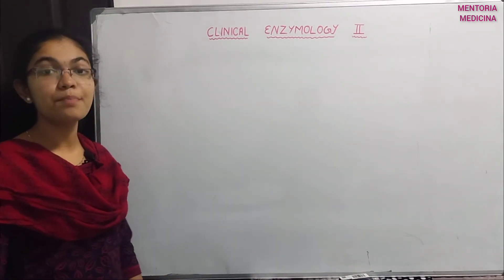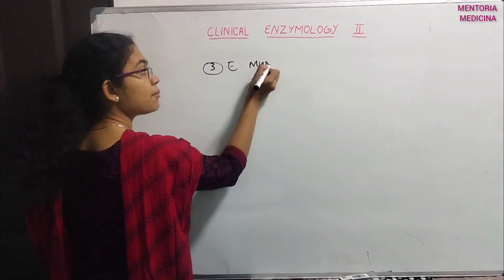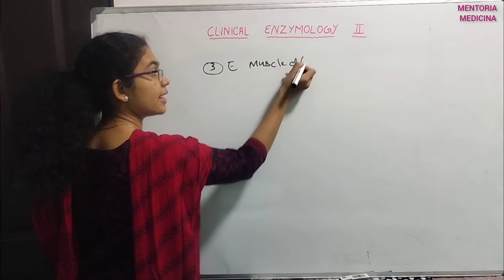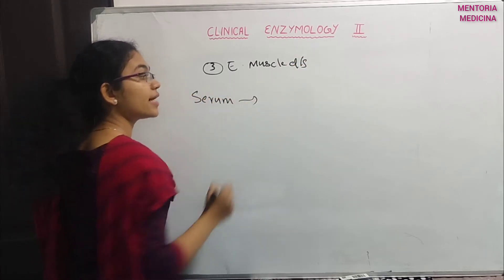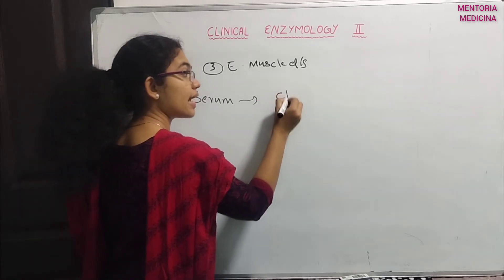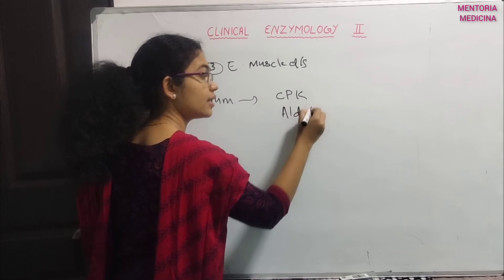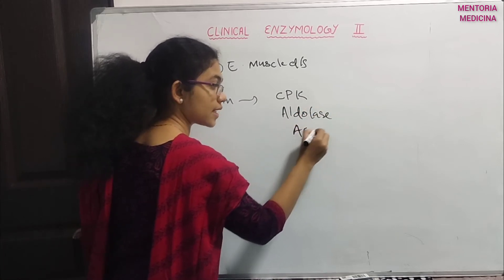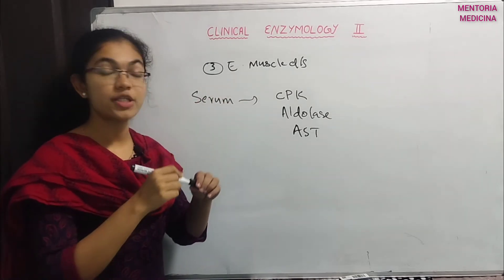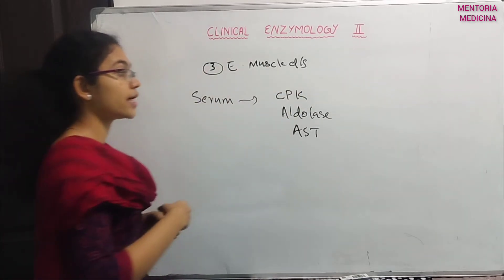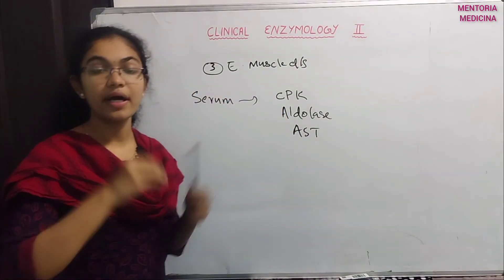When the aspartate aminotransferase to alanine aminotransferase ratio is elevated, it indicates muscle disease.